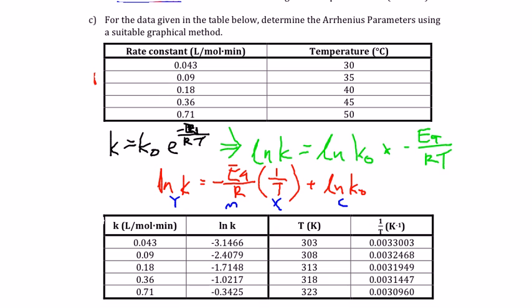So, in order to draw a graph with these values, we will first need to find ln K and 1 over T. So, we have done that in this graph, ln K. And we have to make sure that the temperature is in Kelvins so that we can use the values.